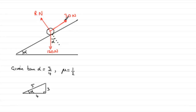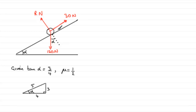We're asked to find the direction of the frictional force acting on the particle. In the previous part, we found that the maximum value of P which caused the particle to want to move upwards was 120 newtons. So we've reduced that down to 30 newtons, which means the particle is going to want to move down the plane. If it's going to want to move down the plane, then friction must oppose motion, so it's going to act up the plane. We'll put that frictional force there and call it F.